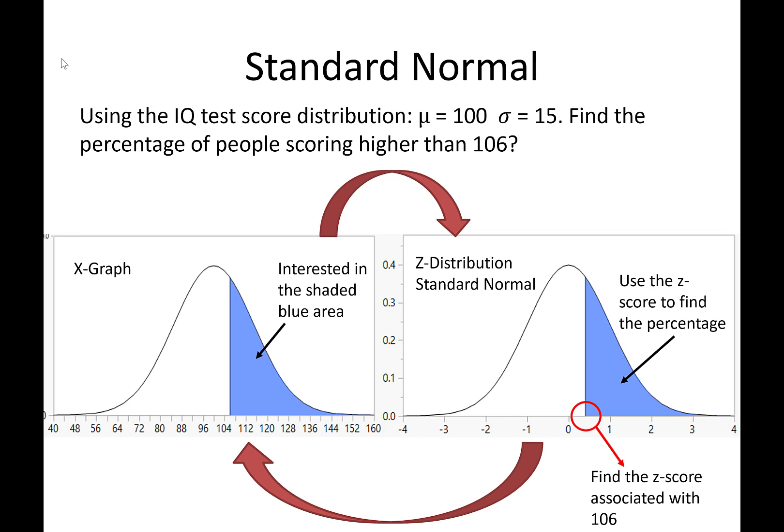So we're going to be focusing a lot on standardization in this class. Standardizing a value into how many standard deviations away from the mean is some value. We'll find the probabilities and percentages in our standardized graph, in this case a z-distribution or a standard normal distribution. And then we'll associate that probability back.